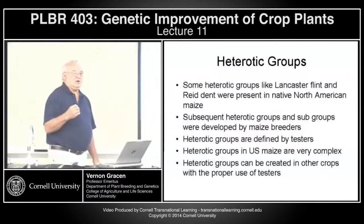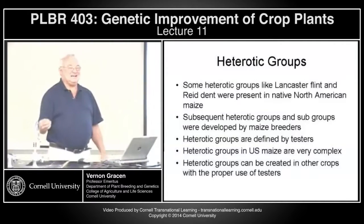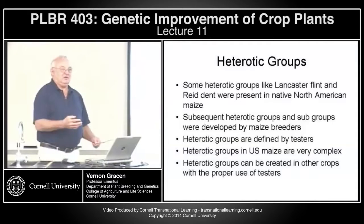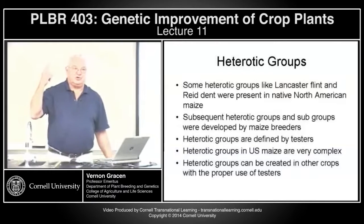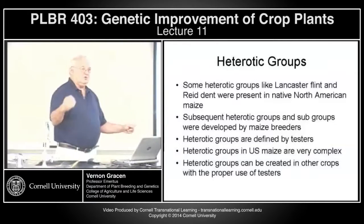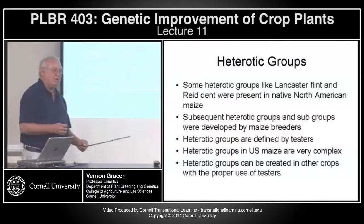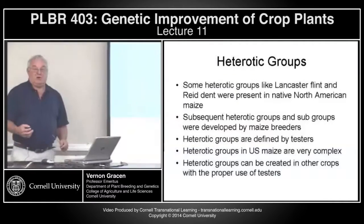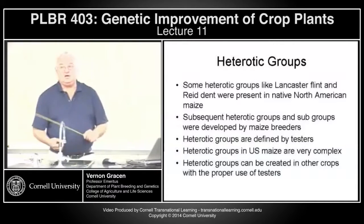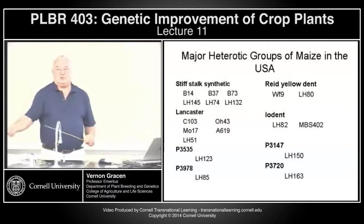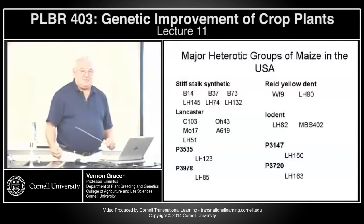When I was at Cargill, I asked our other crop breeders to start looking for testers for specific combinability. Our sorghum breeders first came up with new levels of heterosis by finding combinations they'd never considered. Then our hybrid wheat program found heterotic groups that could be identified in wheat, then sunflower, then cotton, then winter rapeseed programs. You can develop heterotic groups in other crops.